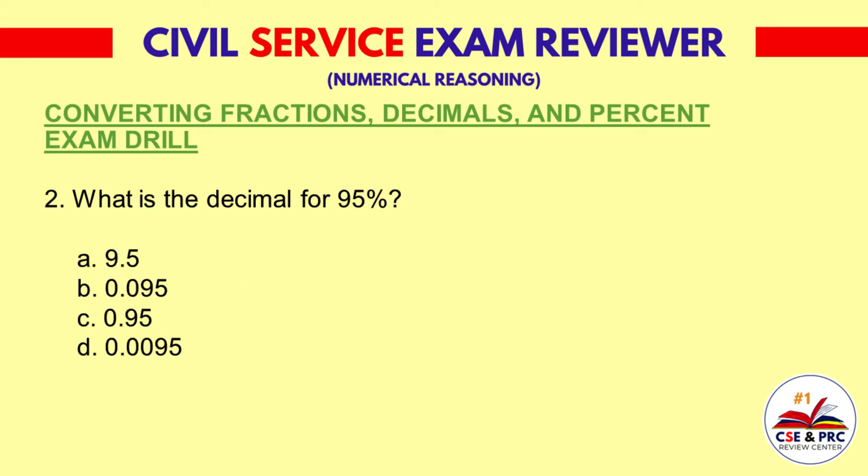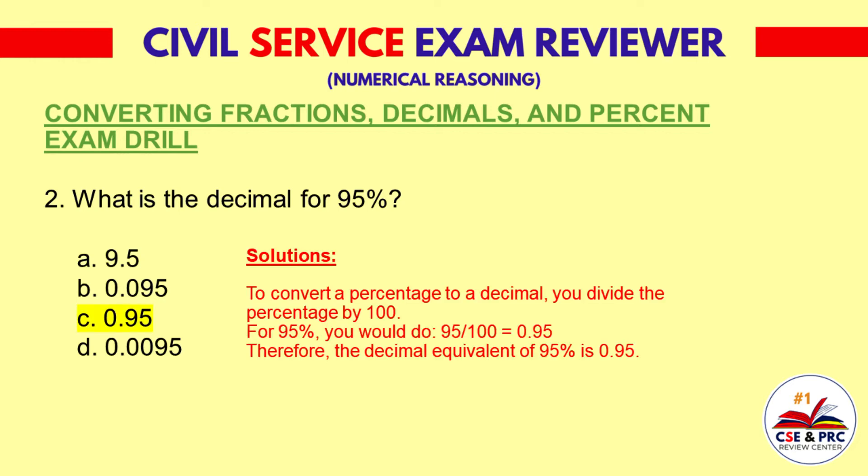2. What is the decimal for 95%? a) 9.5, b) 0.095, c) 0.95, d) 0.0095. The answer is C, 0.95.